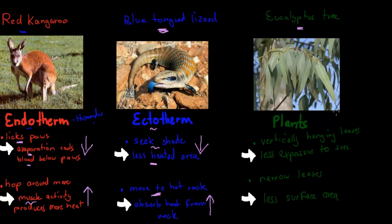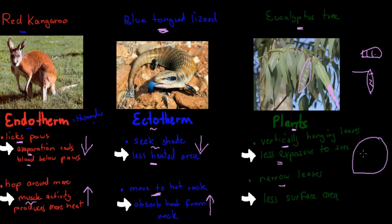The eucalyptus tree is an example of a plant in Australia that has mechanisms to control its leaf temperature. For example, its leaves hang vertically — downwards — which allows less sun exposure on the leaf surface, meaning less heating up compared to if they were horizontal. Another adaptation is narrow leaves, which allow only a tiny bit of sun exposure compared to a broader leaf. These are two mechanisms that allow plants to absorb less heat and survive in the hot Australian climate.